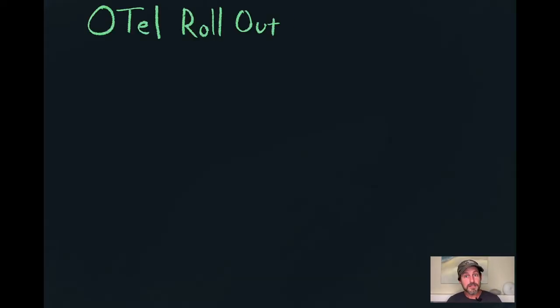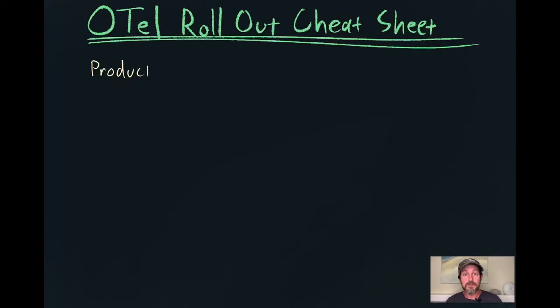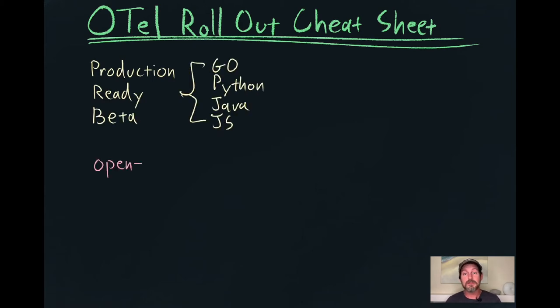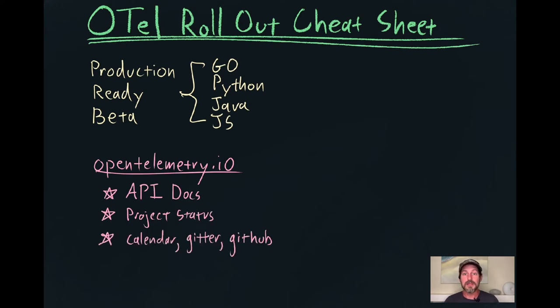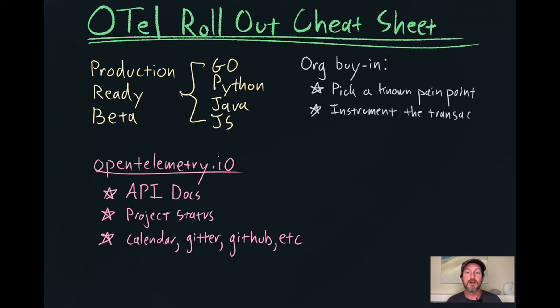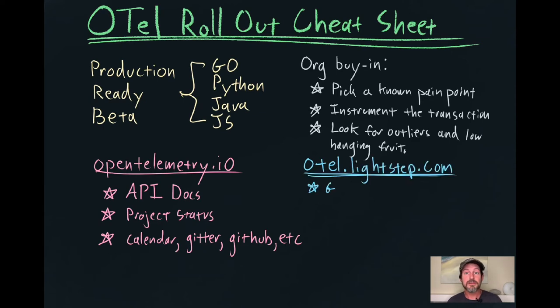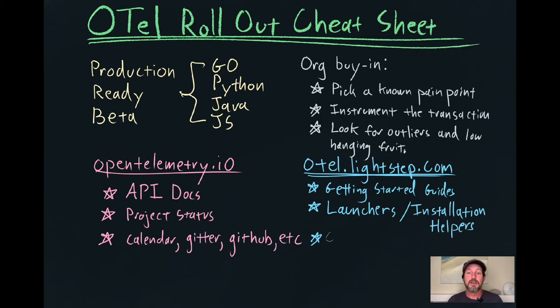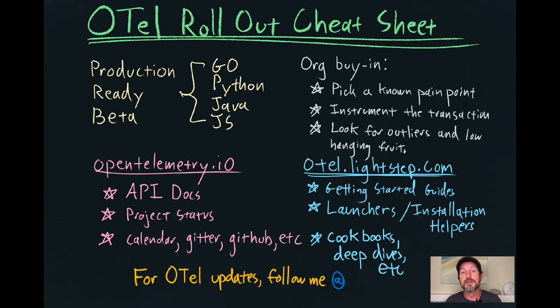We're getting close to the end — let's do a recap. If you want to get started with OpenTelemetry, the first thing to do is audit your system and cross-check whether the languages you're using are ready. The four most production-ready languages are Go, Python, Java, and JavaScript. Erlang is also getting ready to go, and there are a whole bunch of other languages waiting in the wings. It's best to go say hi to the implementation working group or kick the tires before rolling this stuff out into production, because it really is still in beta.